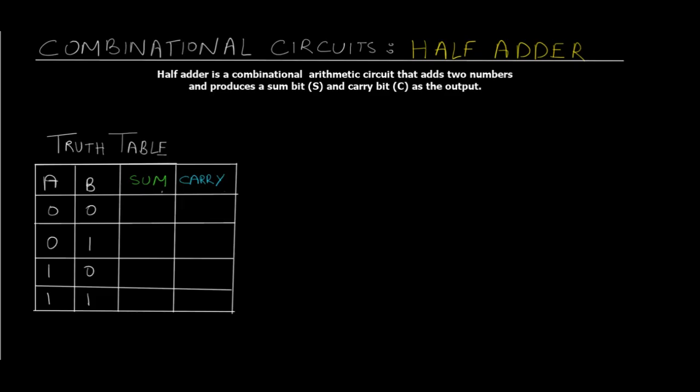A half adder is a combinational arithmetic circuit that adds two numbers and produces a sum bit and a carry bit as the output. We already know how to add two binary numbers. Now here I have drawn a truth table.